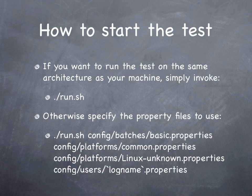When you've got all of the configuration files ready, you can start the test by running the run.sh script. If you're going to test on the same architecture as you're running on, you don't need to specify the names of the config files. Otherwise, you need to list all of the property files you're going to use for the test.